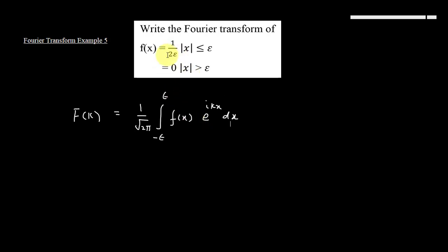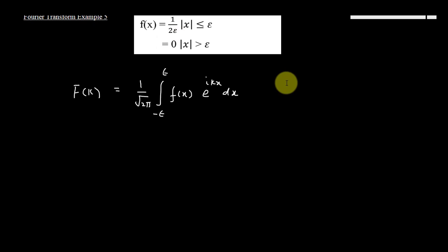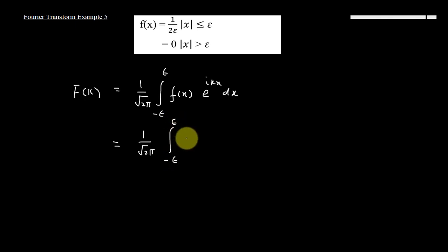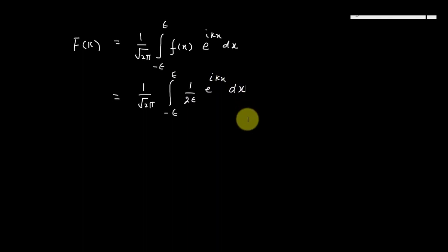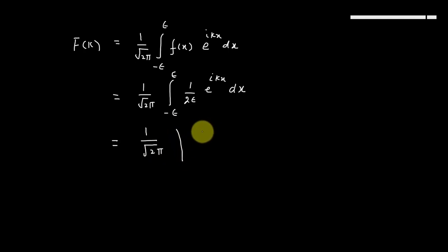تو یہاں پہ میں نے f(x) کی value 1/(2ε) put کرنی ہے۔ This will become equal to 1/√(2π) integration from minus epsilon to plus epsilon of (1/(2ε)) e^(iKx) dx. اب دوستو 1/(2ε) constant ہے، تو میں نے e^(iKx) کو integrate کرنا ہے، this will become equal to 1/√(2π) × 1/(2ε) × e^(iKx).